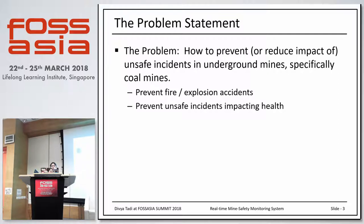The problem solution is: we need a monitoring system to monitor fire accidents and harmful gases. To monitor this, we need to monitor temperature, humidity, methane, and carbon monoxide. To monitor these parameters, we need sensors — the DTH11 sensor, MQ4 sensor, and MQ7 sensor.